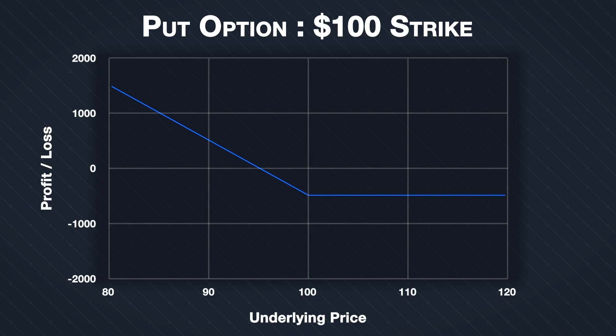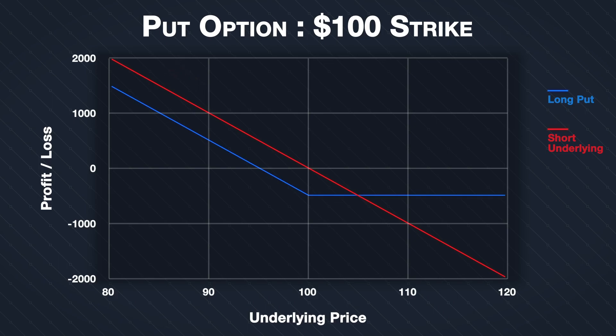Shorting or selling the stock leads to a straight line in red, which continues all the way back to an underlying price of zero to the downside and off to infinity to the upside.